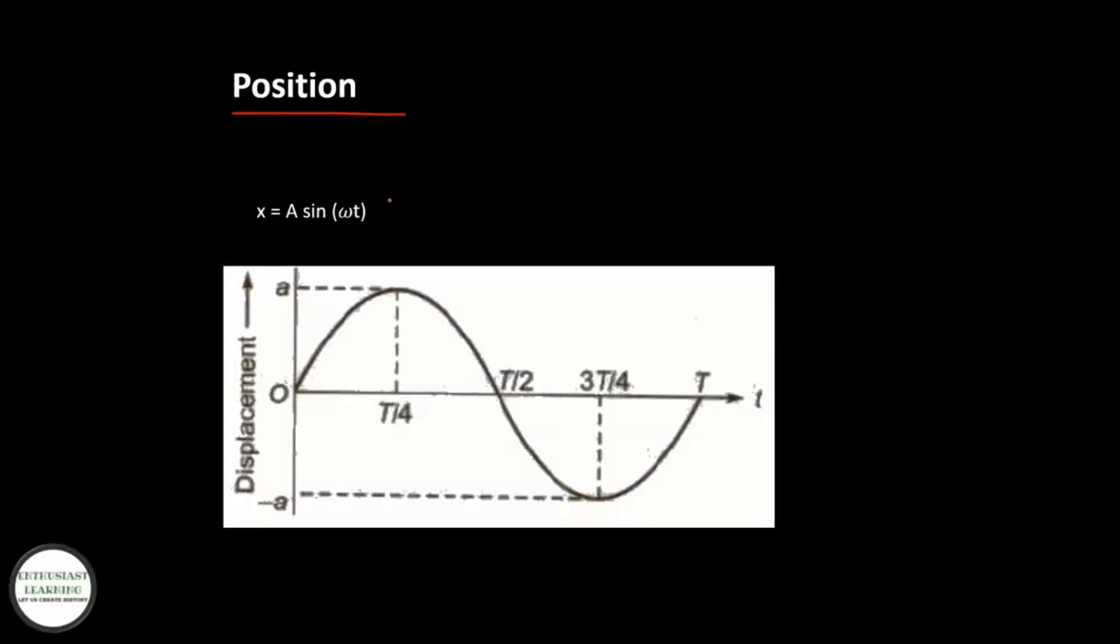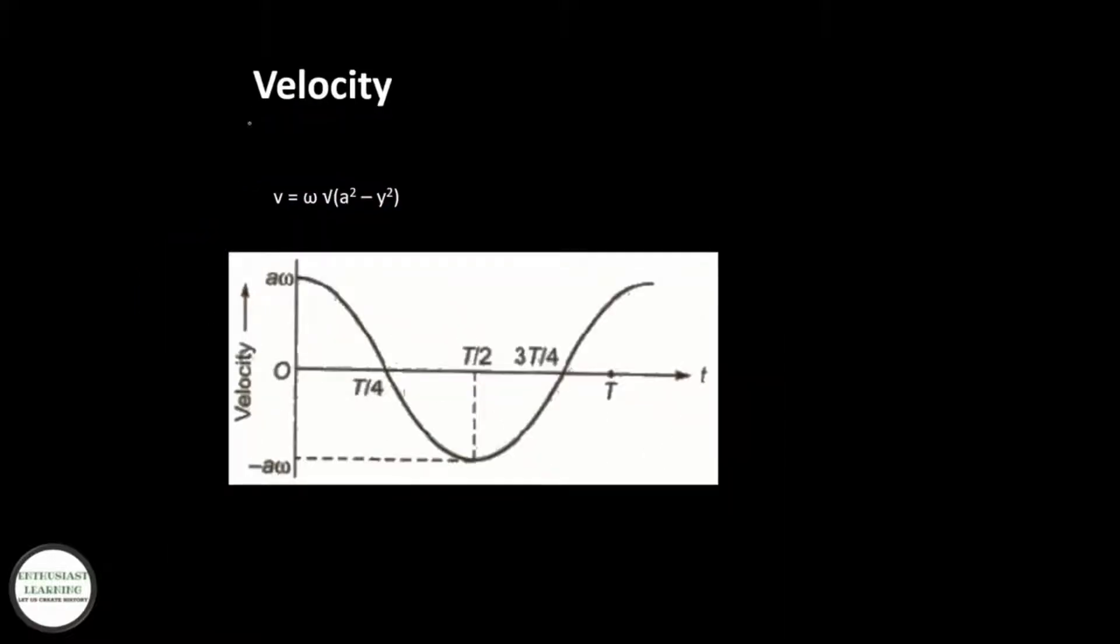Position is given by x = A sin(ωt). Here you can see the graph of position versus time. Velocity v = ωA cos(ωt). Here you can see the graph of velocity versus time.